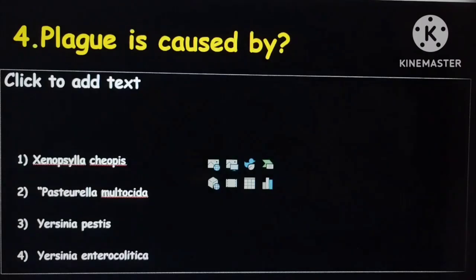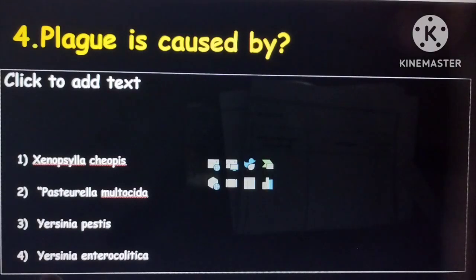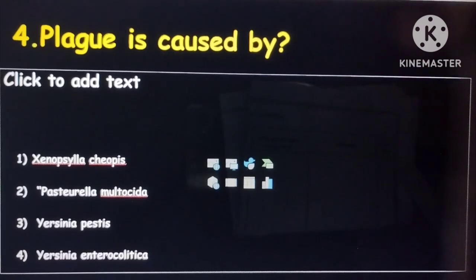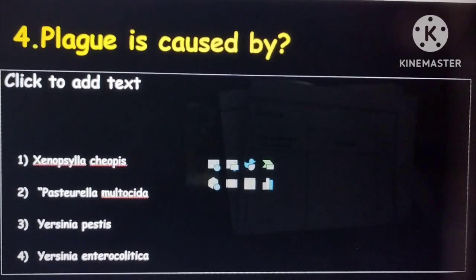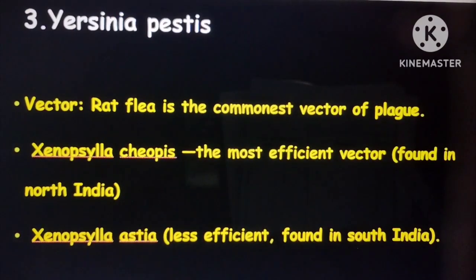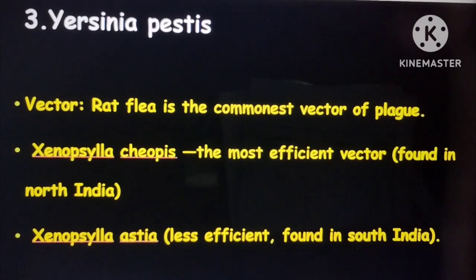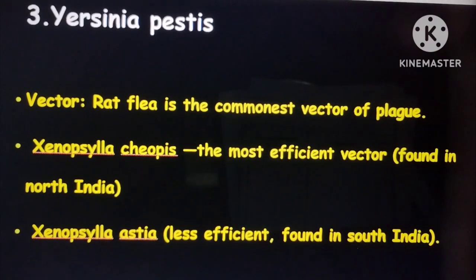The fourth question: plague is caused by — Yersinia pestis, Xenopsylla cheopis, Pasteurella multocida, or Yersinia enterocolitica? The answer is Yersinia pestis. Note that Yersinia enterocolitica causes yersiniosis. The vector for plague is the rat flea; Xenopsylla cheopis is the most important vector in North India, whereas Xenopsylla astia is usually seen in South India.